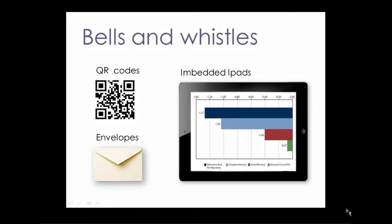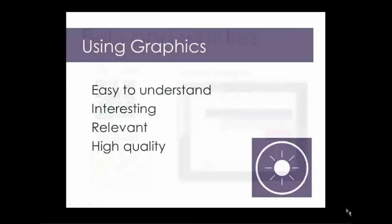If you are feeling very adventurous and creative, you can add features to your poster to really catch people's attention. Embedded iPads have been used before in CTAC posters to great success — they can loop animations or photos to demonstrate change over time and add a real wow factor. QR codes can link your poster to additional web-based information. And we suggest attaching an envelope for business cards. So when using graphics, make sure they are easy to understand, interesting, relevant, and high quality.